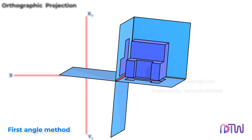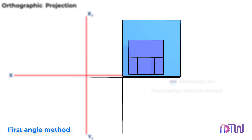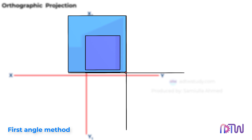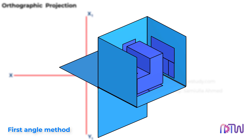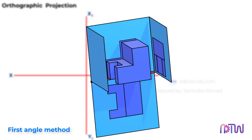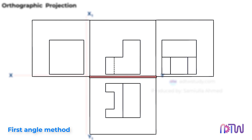When the viewer views the object from the left side, the side view will look like this. When the viewer views from the right side, the right side view will be projected on the reference plane. To represent this in a two-dimensional view, we rotate the horizontal axis in a clockwise direction and unfold the reference planes. In the first angle method, the front view is above the reference line, the top view is below, the left side view is on the right side, and the right side view is on the left side of the front view.